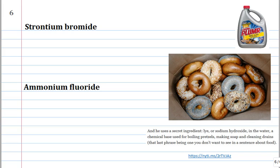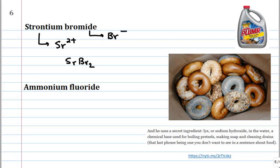Strontium bromide — from the periodic table, you can predict what ion strontium will form: Sr2+. You can also figure out which ion bromine forms — the periodic table lights your path. So we have Sr2+ and Br-. We need to write them a formula with no net charge or electrical neutrality. The formula has to be SrBr2 — we need two bromide ions for every one strontium ion. 2+ equals 2-.